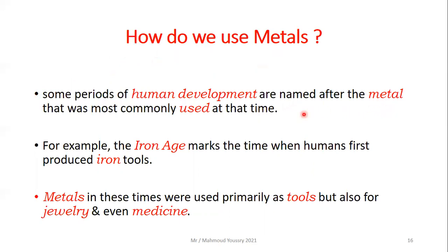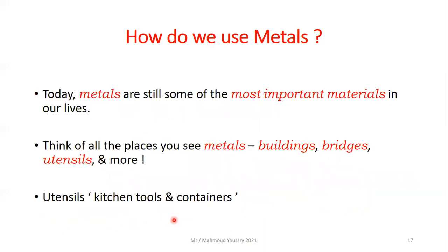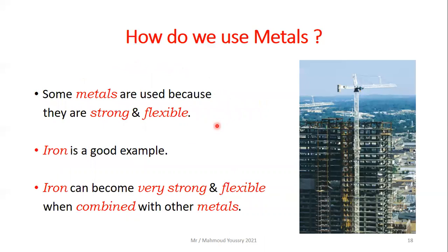Some periods of human development are named after the metal commonly used at that time. The Iron Age marks the time when humans first produced iron tools. Metals were used primarily as tools, but also for jewelry and medicine. Today, metals are still some of the most important materials in our lives — in buildings, bridges, and utensils. Some metals can be used because they are strong and flexible, and iron is a great example.